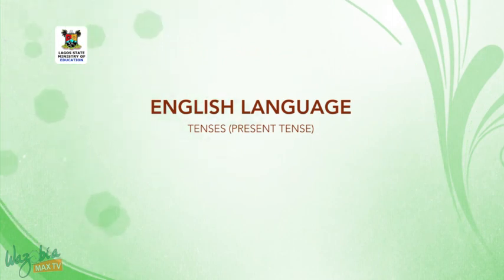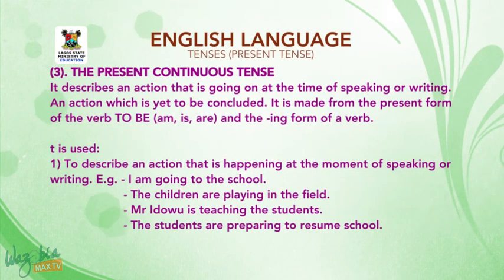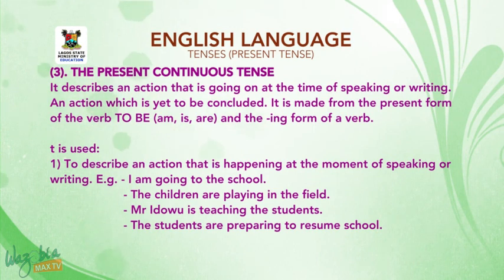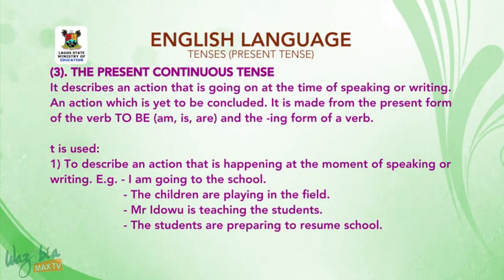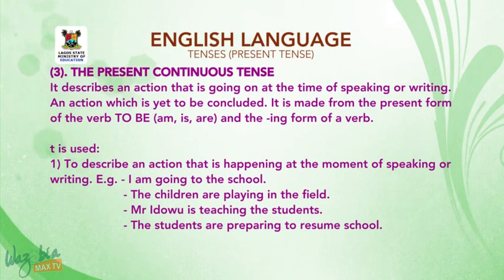Welcome to the last part of today's lesson. The topic is the present tense. Let's continue with the present continuous tense. It describes an action that is going on at the time of speaking or writing — an action which is yet to be concluded. It is made from the present form of the verb 'to be' (i.e., am, is, or are) and the -ing form of a verb.